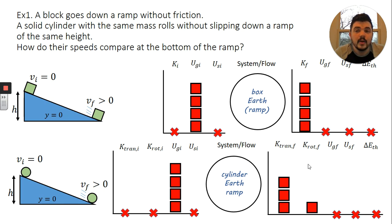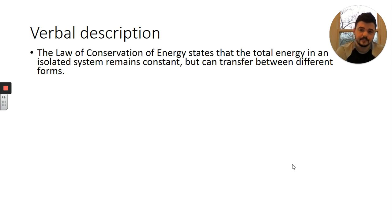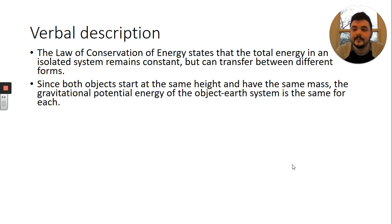Let's think about how we might write that on an AP test. So here's a verbal description. We always start with a law of physics that is always true. In this case, the law of physics that we used is the law of conservation of energy. And I wrote a lot here. Feel free to pause the video and write it down if you want. The law of conservation of energy states that the total energy in an isolated system remains constant, but it can transfer between different energy forms. Since both objects start at the same height and have the same mass, the gravitational potential energy of the object Earth system is the same for each.